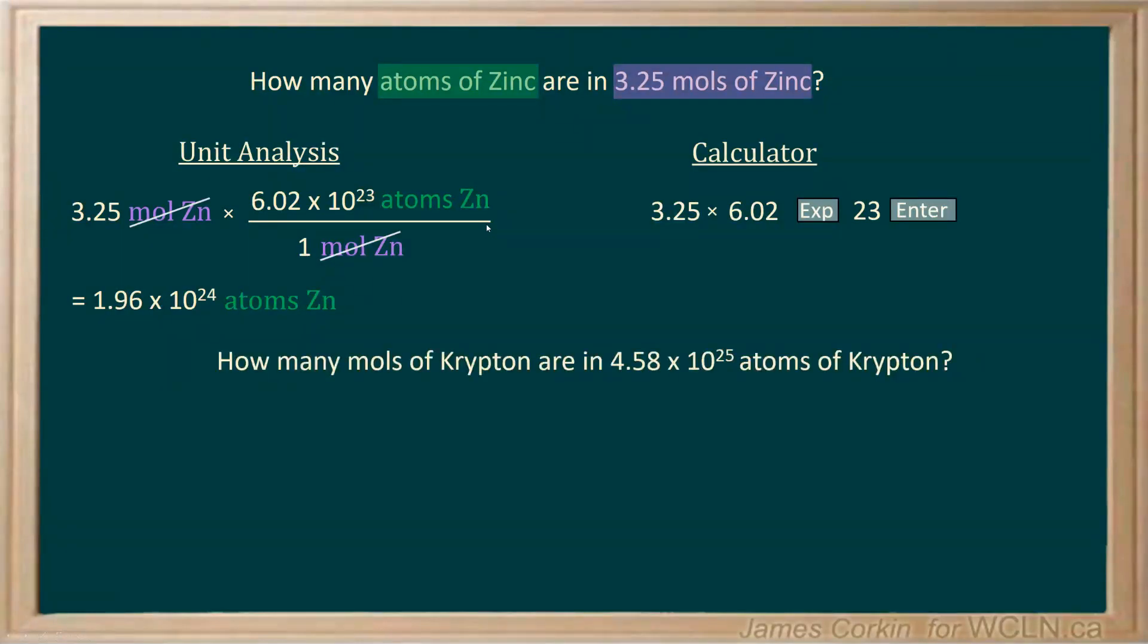How many moles of krypton are in 4.58 times 10 to the power of 25 atoms of krypton? Let's identify the number we have. 4.58 times 10 to the 25 atoms. And what we're trying to find is moles of krypton. This is the opposite of our previous question.